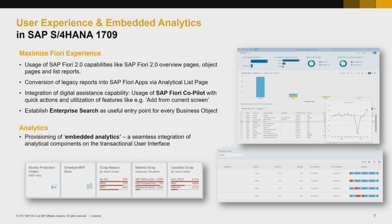With S4HANA 1709, we are continuing to maximize the Fiori experience for end users, bringing, for example, additional overview pages for different roles, similarly to the already known app for procurement and sales. With this, end users get all information at a glance, with the ability to drill into details, including analytical and predictive information.